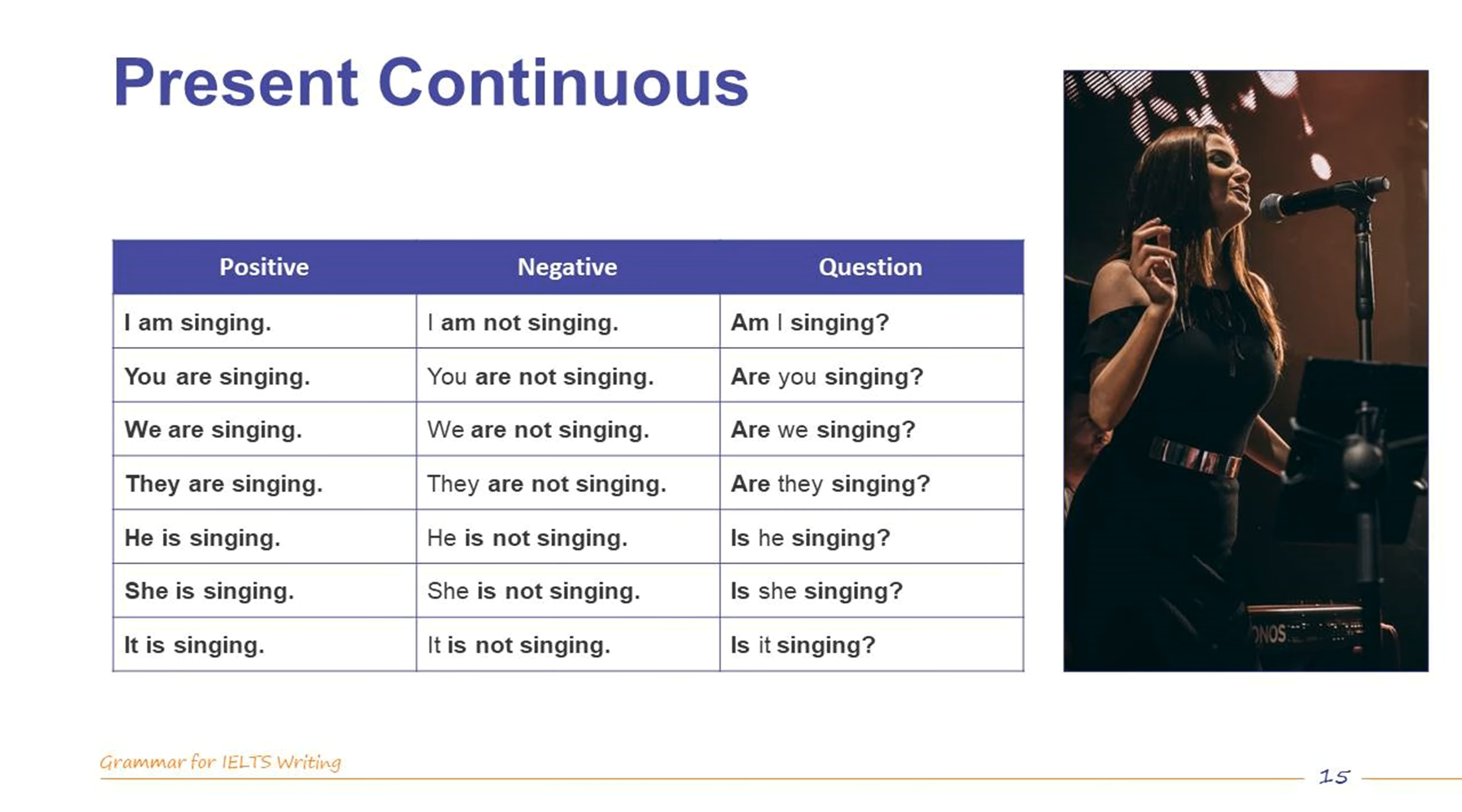The present continuous is sometimes called the present progressive. However, as most textbooks refer to it as the continuous, I will use that term here. It is formed by using to be and then the verb plus ING. Again, be careful of contractions. In writing, we would say are not, but in spoken English, it is more common to use aren't.